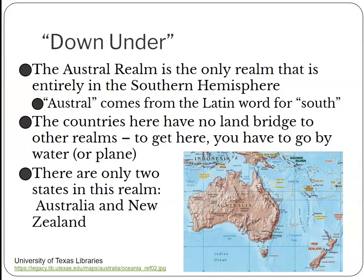You might have heard of the Austral realm also referred to as Down Under, because the Austral realm is the only realm that is entirely in the southern hemisphere. The word 'austral' comes from the Latin word for south. There are only two states in this realm — Australia and New Zealand — and then there are a series of islands. Australia itself is a country, a giant island, and it is the world's smallest continent. With the current sea level, these islands are not connected to other realms by land.